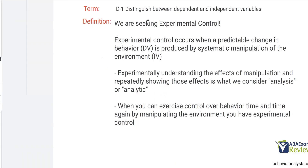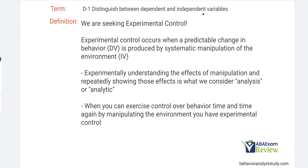So, distinguishing between dependent and independent variables — what's the point? The point is we're seeking experimental control. We want control over that dependent variable. Experimental control occurs when a predictable change in the behavior, the DV, is produced by systematic manipulation of the environment. Important words here: first, predictable change, meaning we can predict and assume what is going to happen to the behavior as we're manipulating the environment — so systematically manipulating the environment — and through those manipulations, we can accurately predict how behavior is going to change.